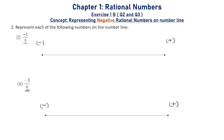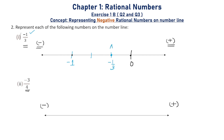Question number 2 says: represent each of the following numbers on the number line. The first number is minus 1 by 3. Since it is a negative number, it will lie on the left hand side of 0 on the number line. We divide the section between 0 and minus 1 into 3 equal parts, as the denominator is 3. Minus 1 by 3 is the first partition, and I will name this point A.